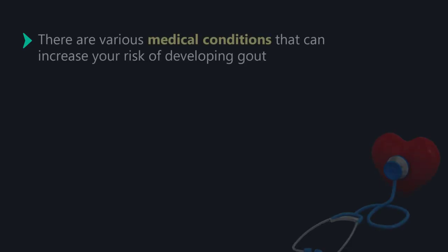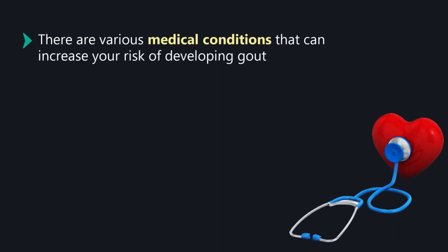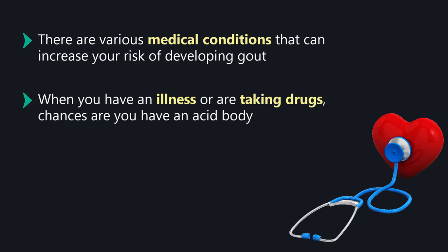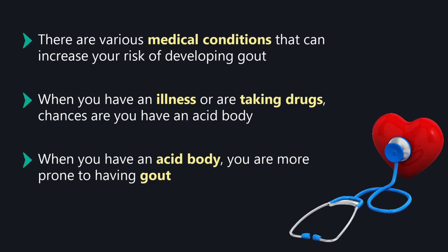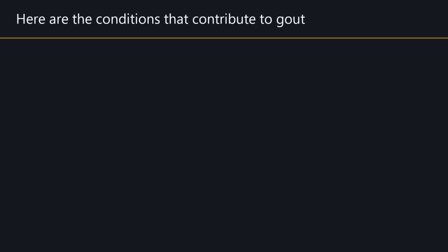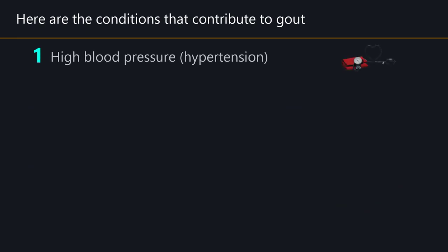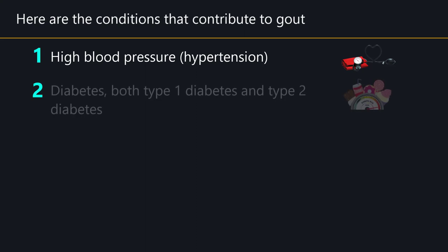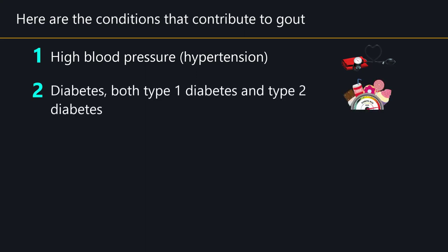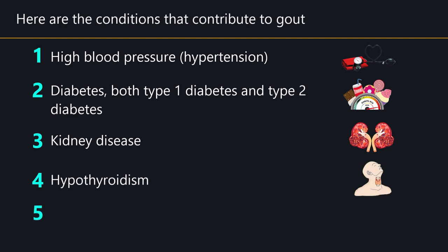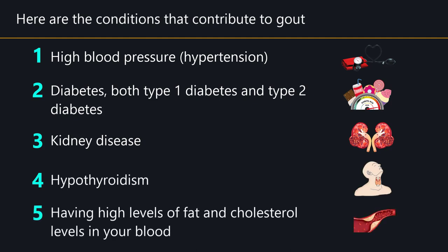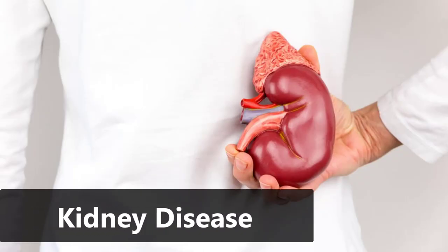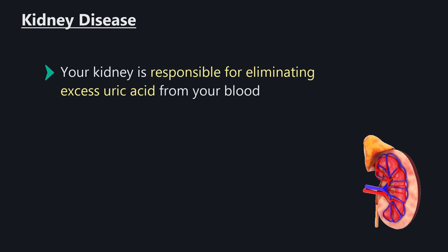Your medical conditions: Various medical conditions can increase your risk of developing gout. When you have an illness or are taking drugs, chances are you have an acid body, and when you have an acid body you are more prone to gout. Conditions that contribute to gout include: one, high blood pressure (hypertension); two, diabetes — both type 1 and type 2; three, kidney disease; four, hypothyroidism; and five, having high levels of fat and cholesterol in your blood.